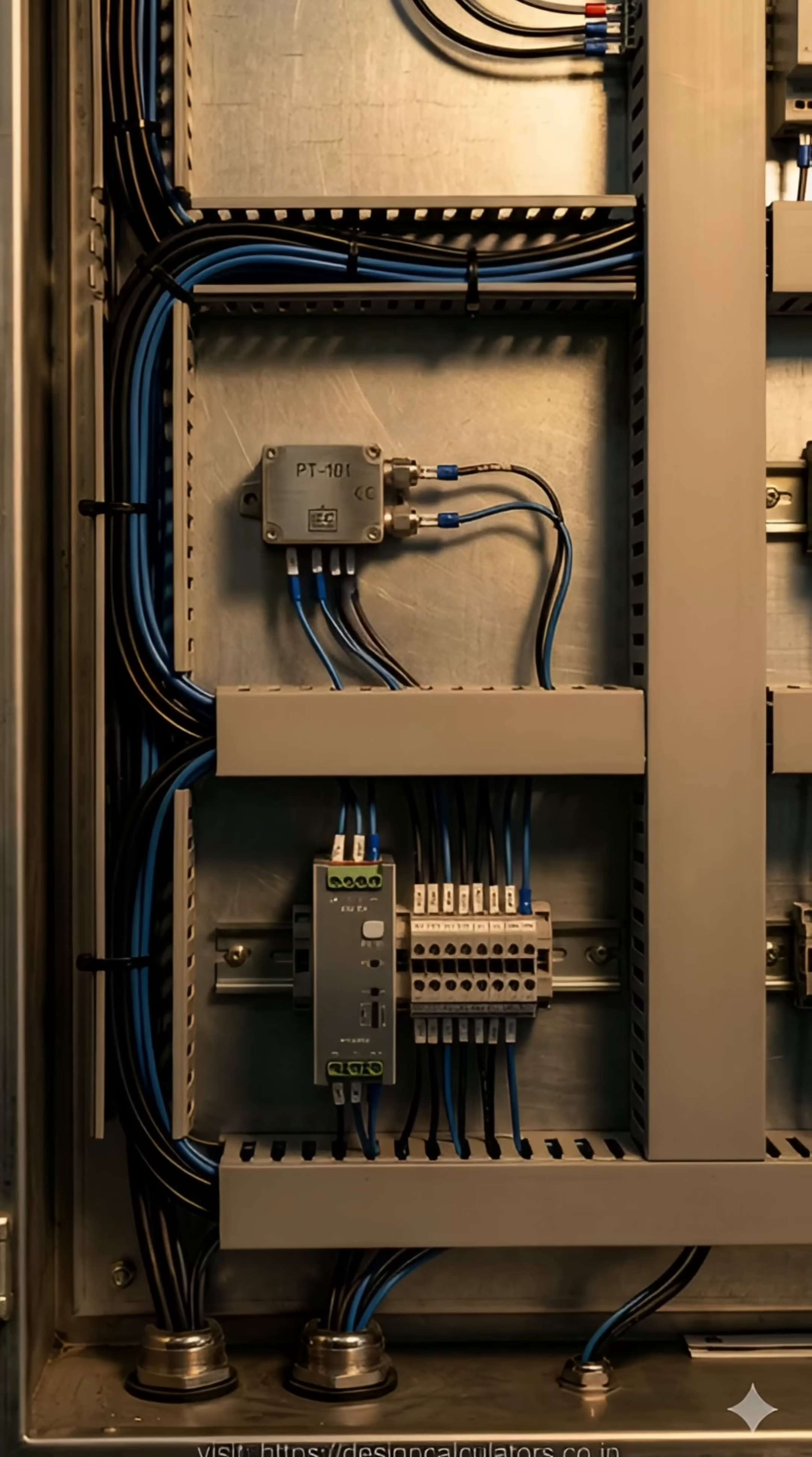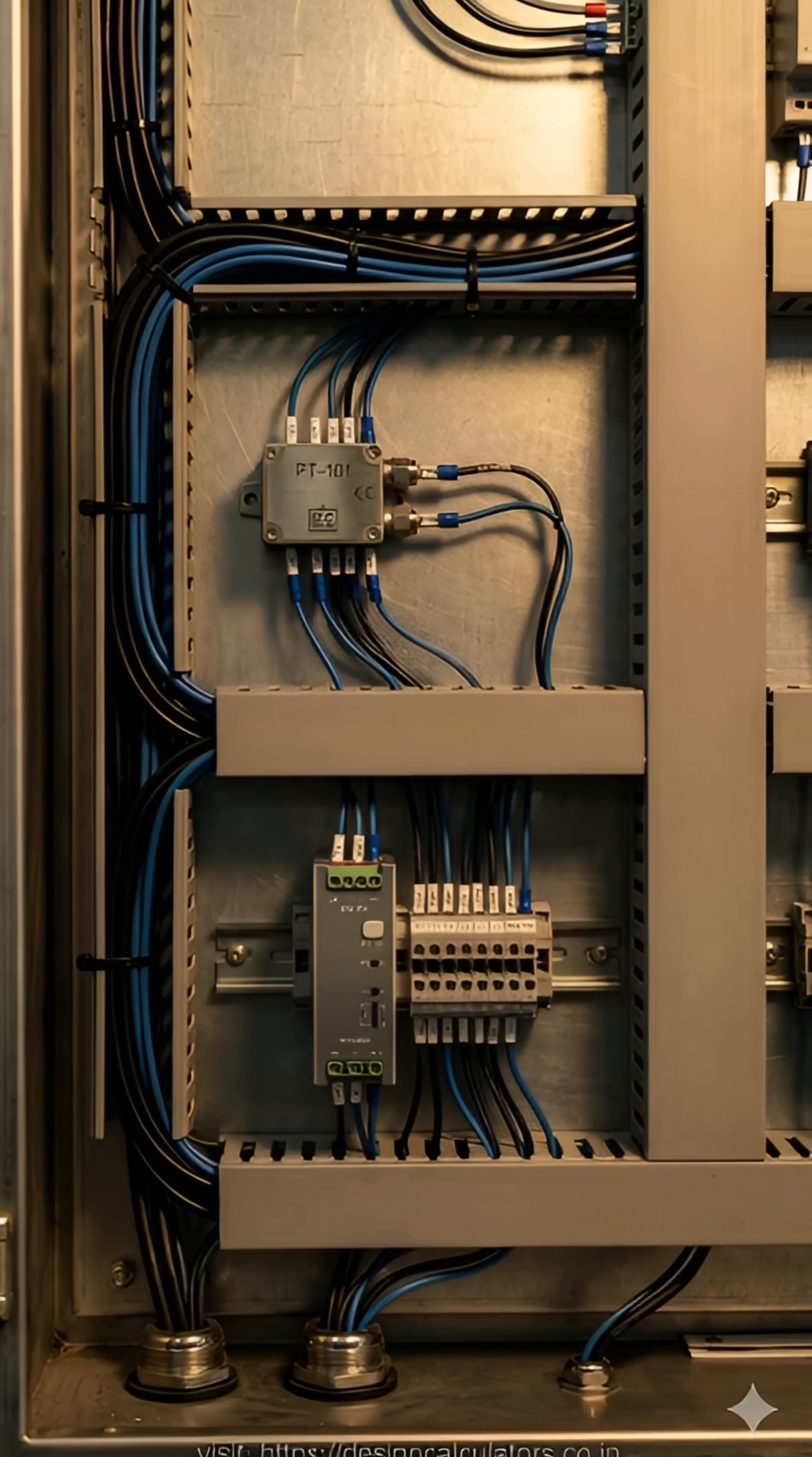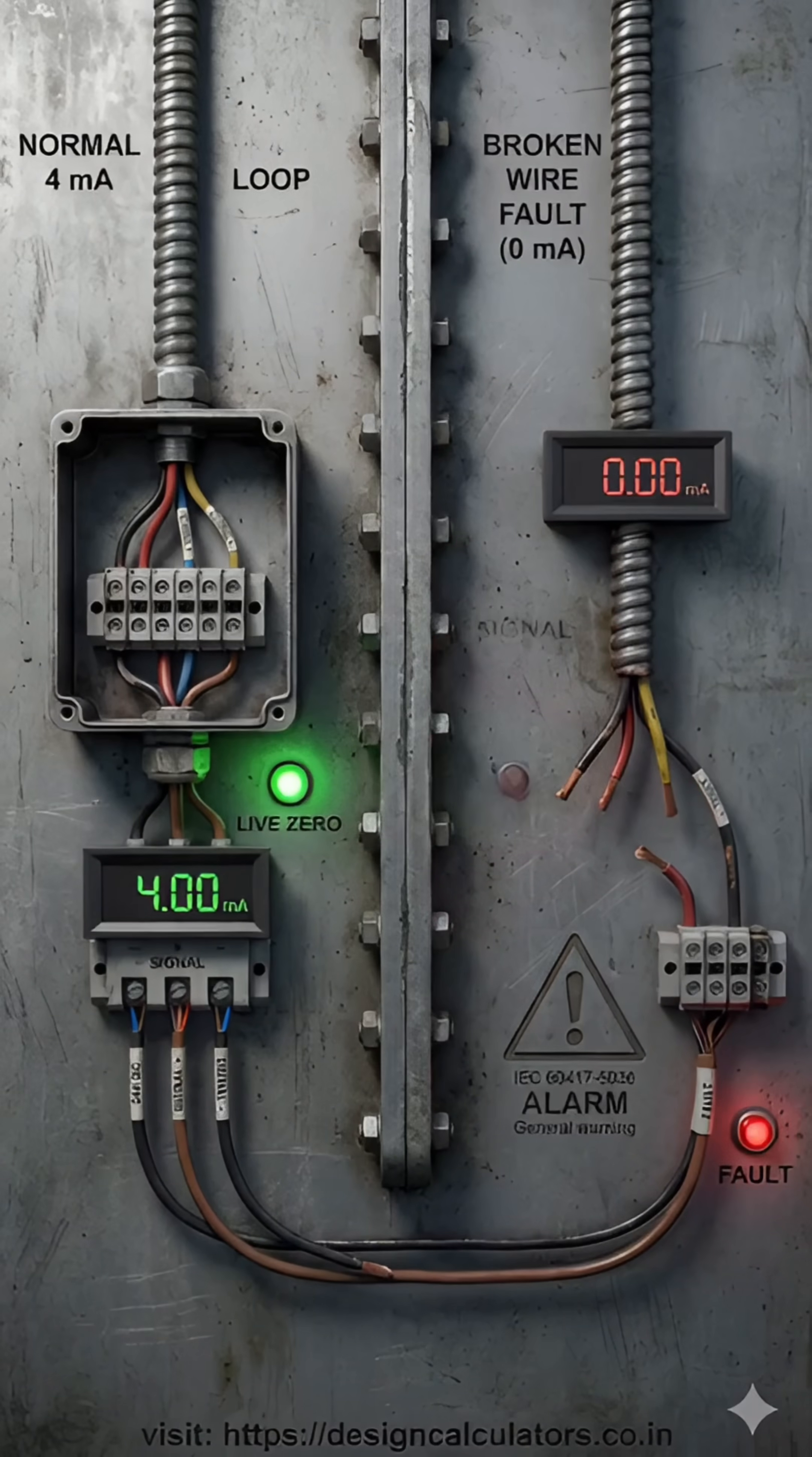This loop powers itself using a two-wire transmitter straight from 24-volt industry power. 4 milliamps means zero value. 20 milliamps means full scale. This is called a live zero signal.